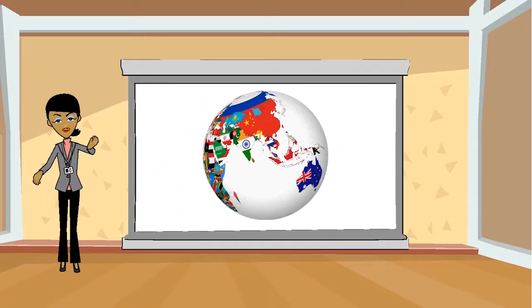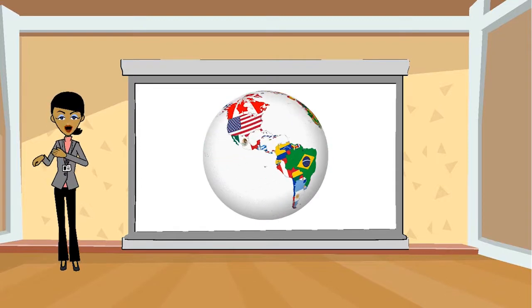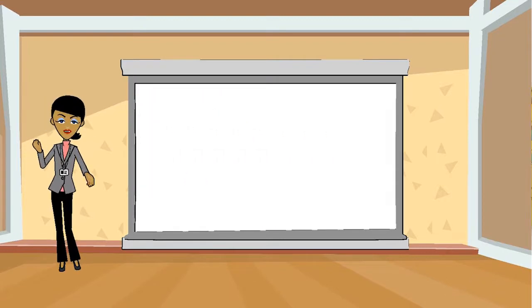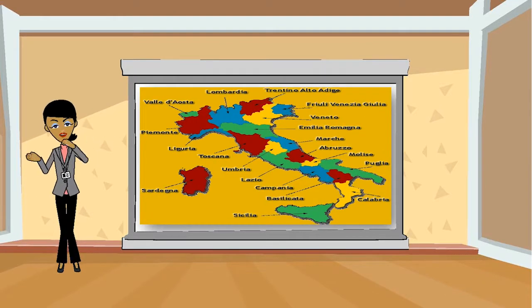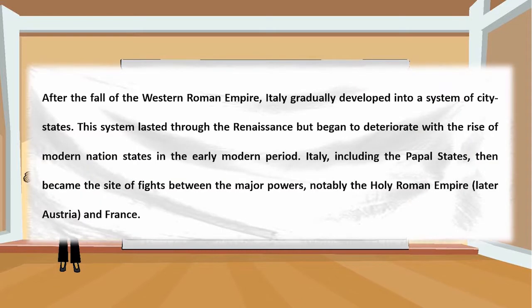Before we start, let's understand the background context. After the fall of the Western Roman Empire, Italy gradually developed into a system of city-states. This system lasted through the Renaissance but began to deteriorate with the rise of modern nation-states in the early modern period. Italy, including the Papal States, then became the site of fights between major powers, notably the Holy Roman Empire, later Austria, and France.